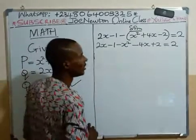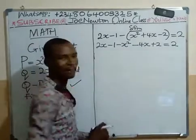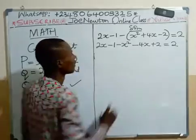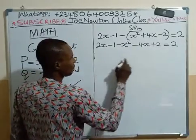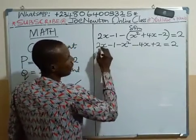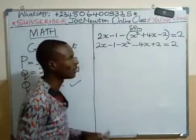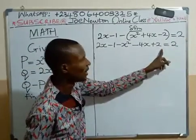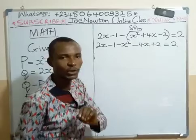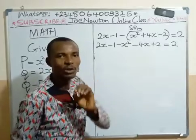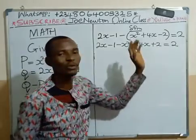The next thing we are going to do now is to simplify further by collecting like terms. Let us now bring this to this side because we are going to form a quadratic equation. And for a typical quadratic equation, it will be equated to zero.